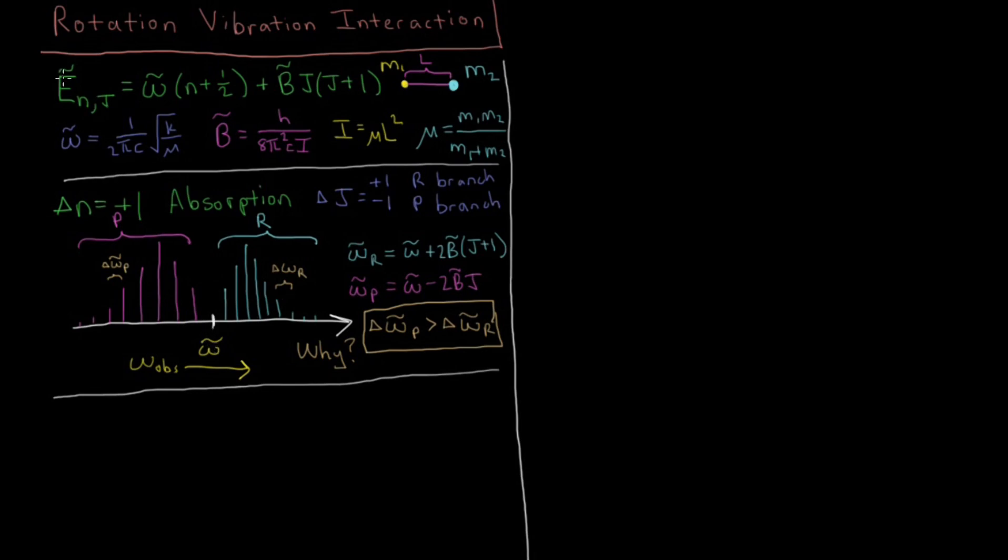So we first approximated the energy levels of a simultaneously rotating and vibrating diatomic molecule as just a sum of the vibrational energy, which is the vibrational frequency times the vibrational quantum number n plus one half, and the rotational energy, which is the rotational constant B̅ times the rotational quantum number j times j plus one. Both n and j start at zero and are integers that go up from there.